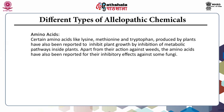The next class is amino acids. Certain amino acids like lysine, methionine and tryptophan produced by plants inhibit plant growth by inhibiting metabolic pathways inside the plants. Apart from their action against weeds, amino acids have also been reported for their inhibitory effects against some fungi.